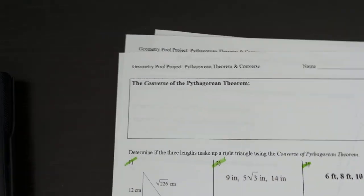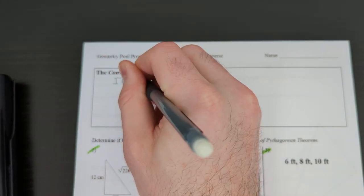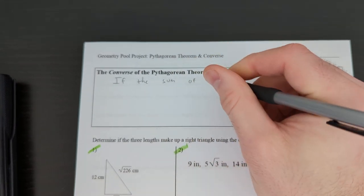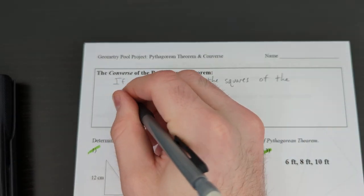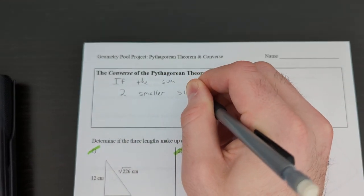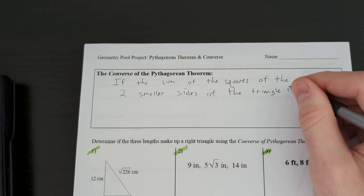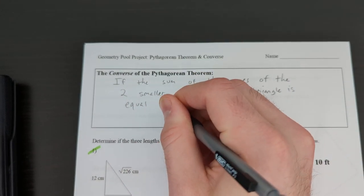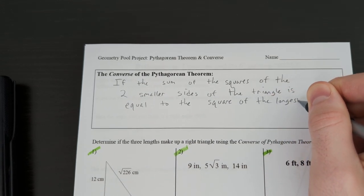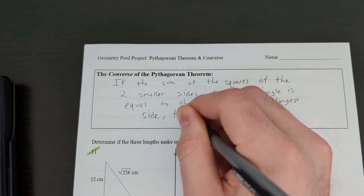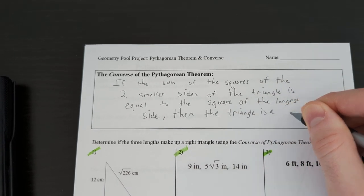All right. The last part of the notes today is the converse of the Pythagorean theorem. Here's a sentence that kind of explains what's going on here. If the sum of the squares of the two smaller sides of the triangle is equal to the square of the longest side, then the triangle is a right triangle.